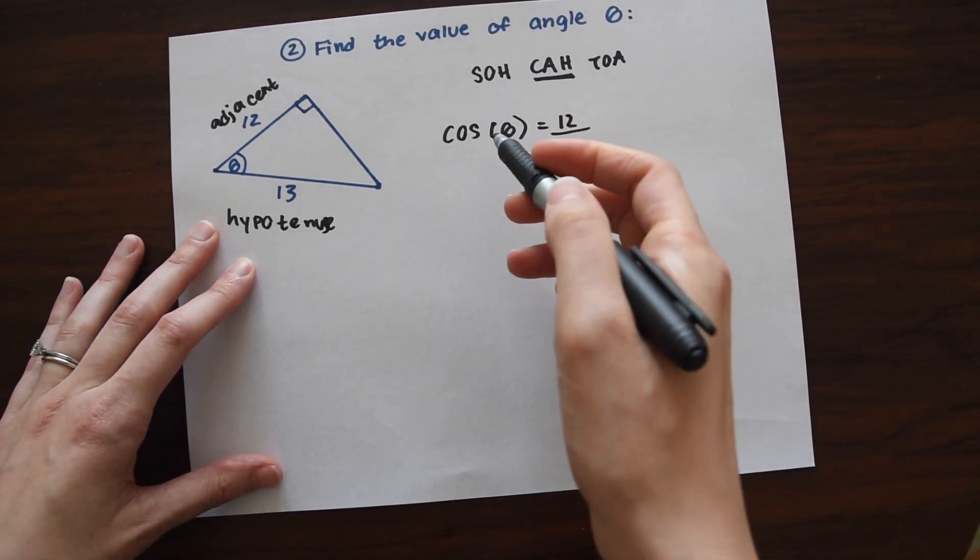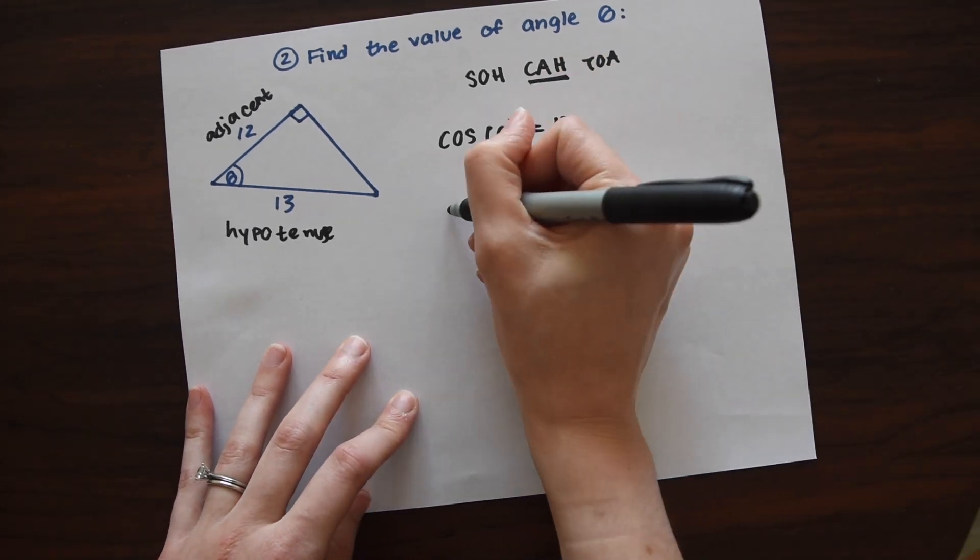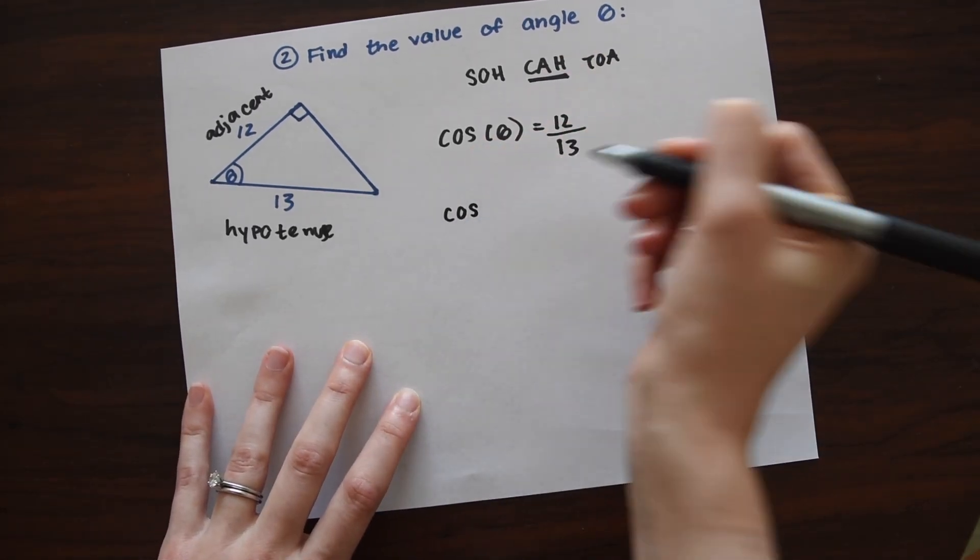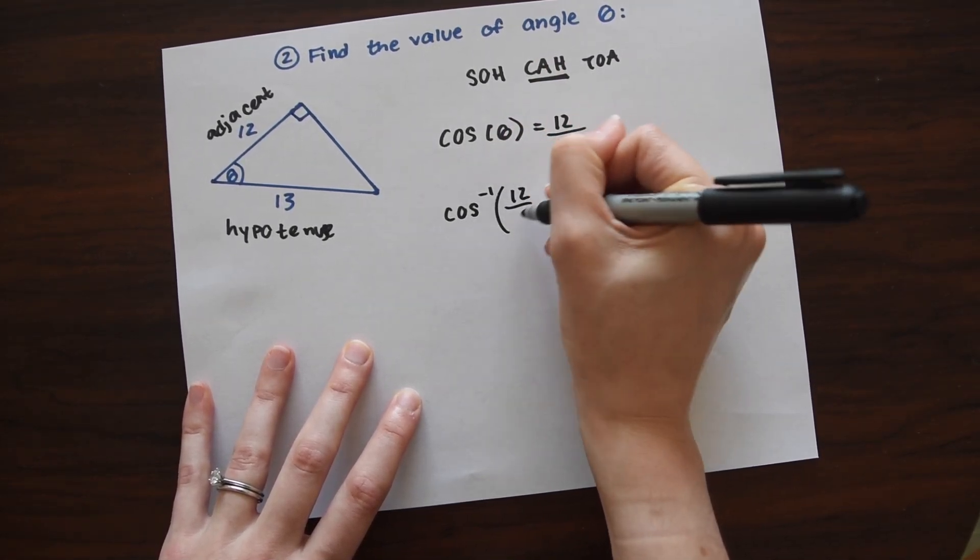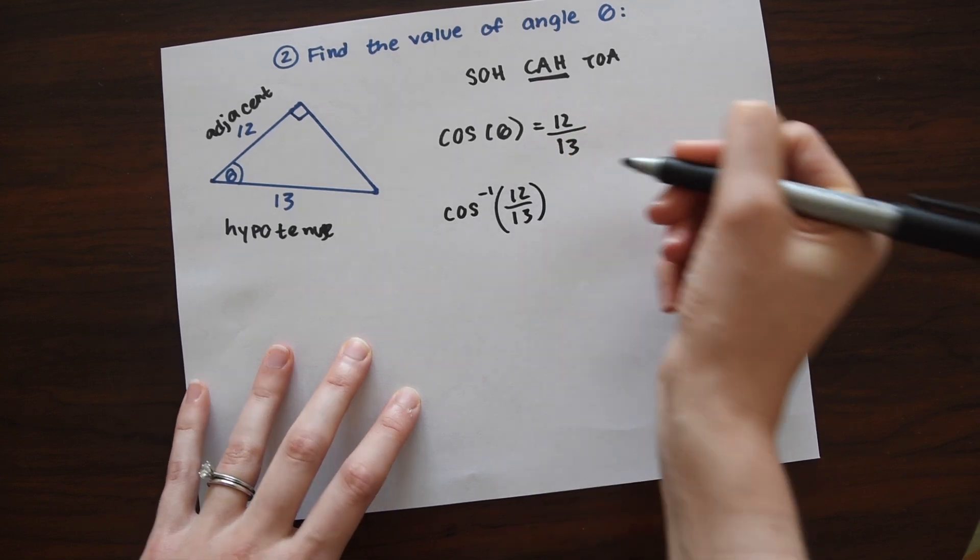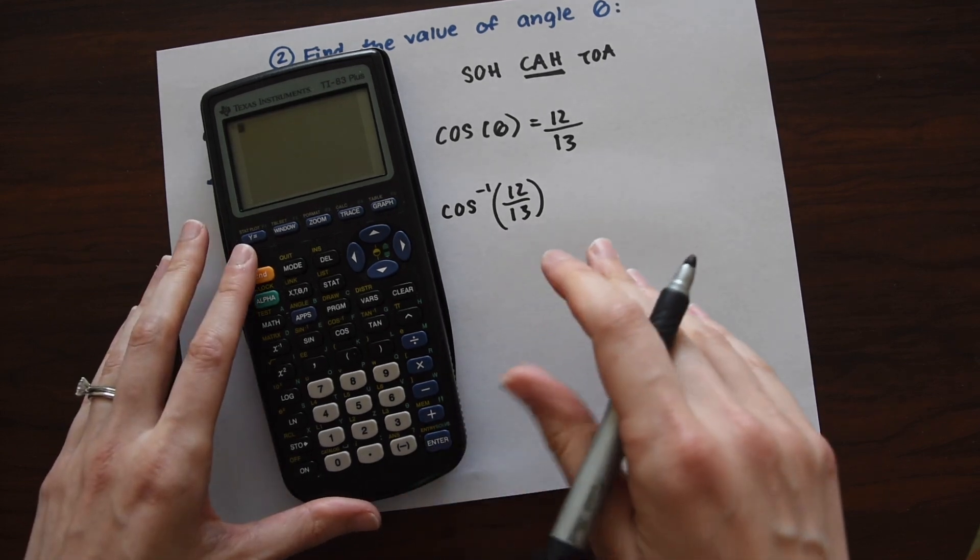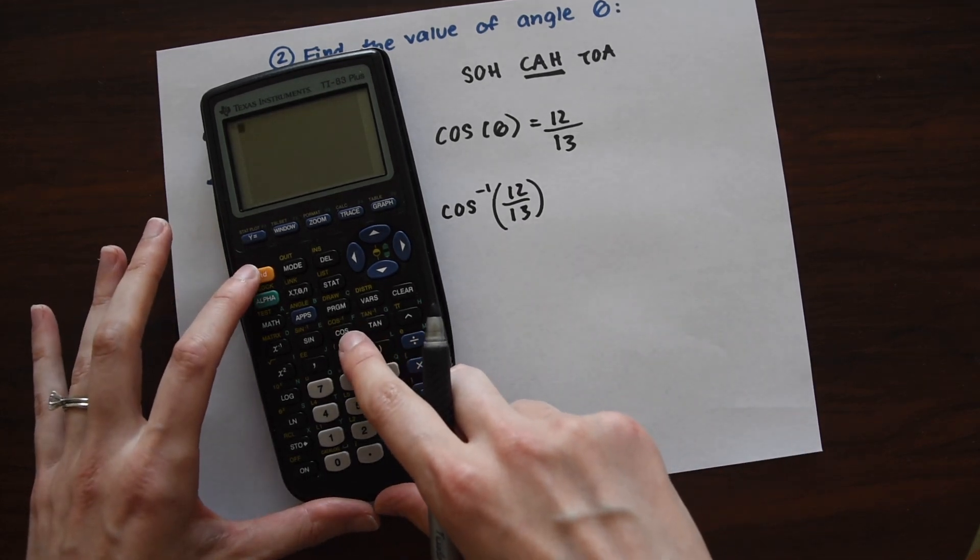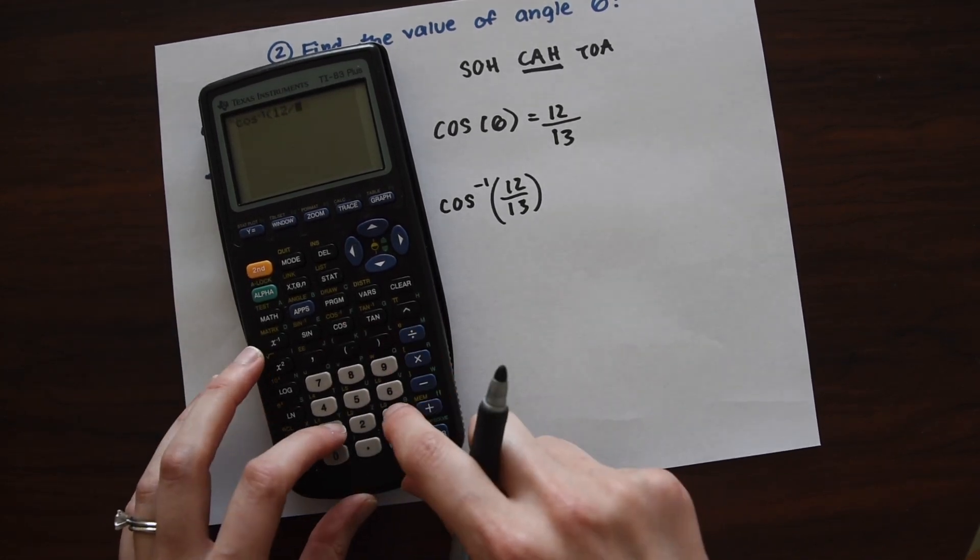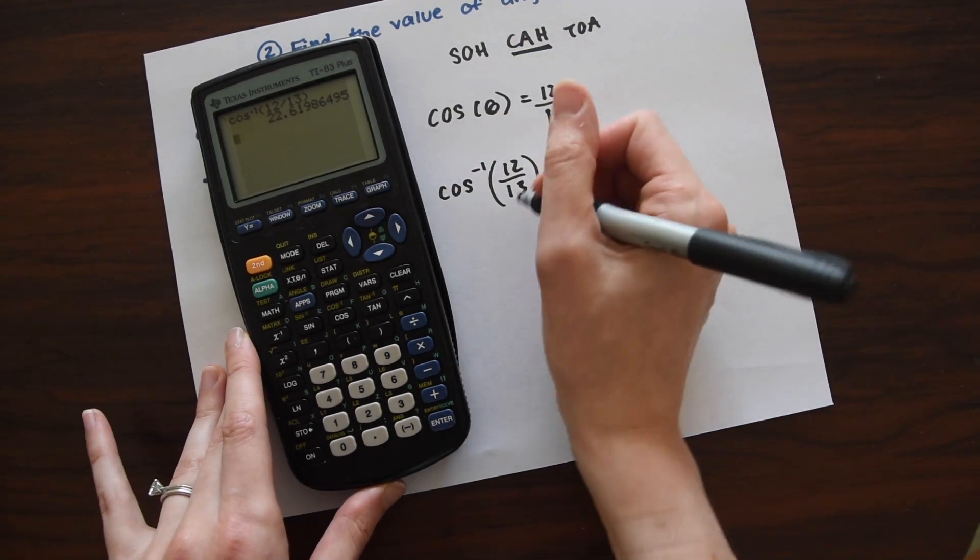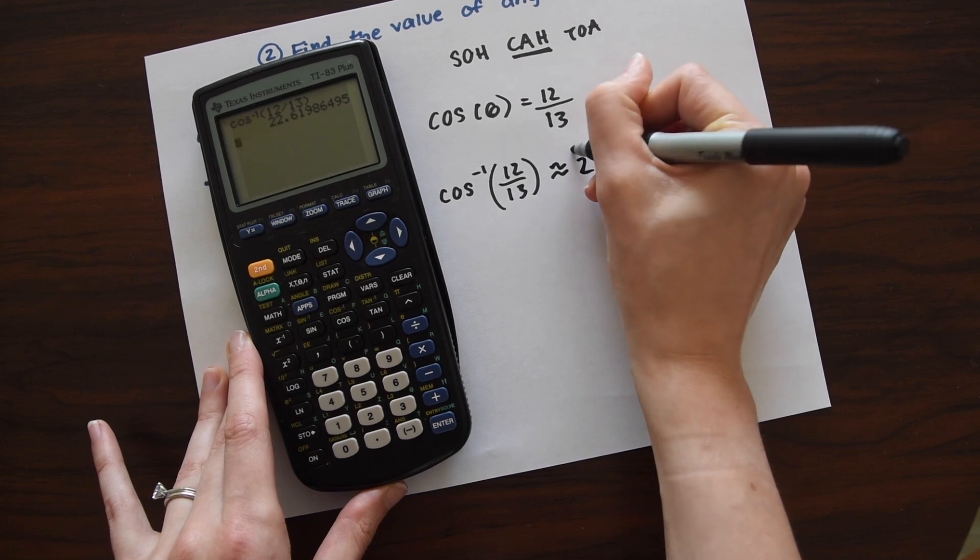So there's some angle value here that gives us 12 over 13. So to find that, we're going to plug something special in the calculator. So we're going to plug in cosine negative one of 12 over 13. So to do that, this is also called arc cosine, the inverse of cosine. So let's go second cosine, and then 12 divided by 13. So we get a really long number here. But this just ends up being 23 degrees, rounded to the nearest whole number.